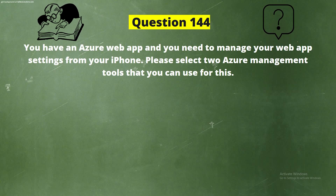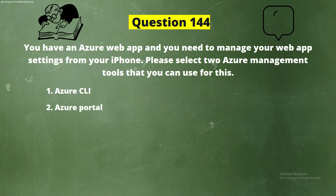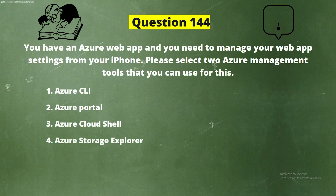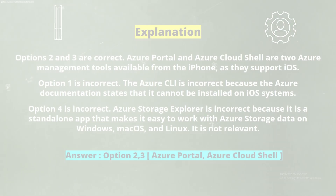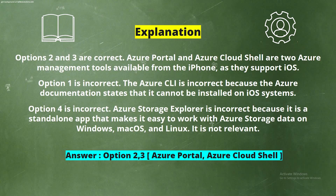Question 144. You have an Azure web app and need to manage your web app settings from your iPhone. Please select two Azure management tools you can use for this. Options: Option 1, Azure CLI; Option 2, Azure Portal; Option 3, Azure Cloud Shell; Option 4, Azure Storage Explorer. The correct answers are Option 2, Azure Portal, and Option 3, Azure Cloud Shell.